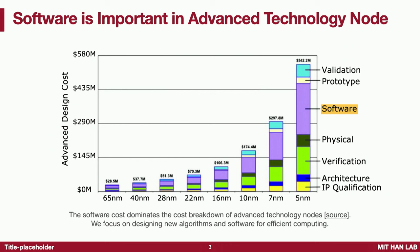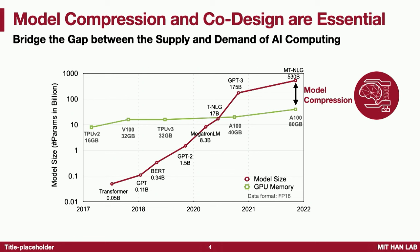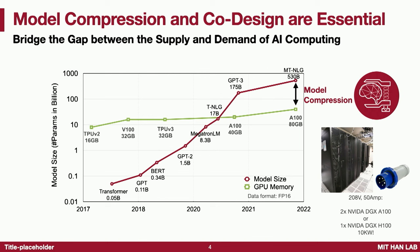Software is very important in advanced technology nodes — especially after five nanometers, the percentage of software cost in chip design is getting quite large. In the context of AI, these models are growing much faster than GPU memory. The GPU memory growth over the years is shown in green, while the red line shows model size growing much faster than Moore's law. So there is a growing gap between the supply and demand of AI computing.